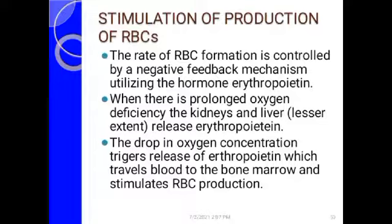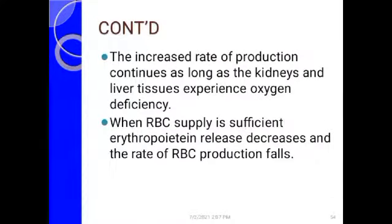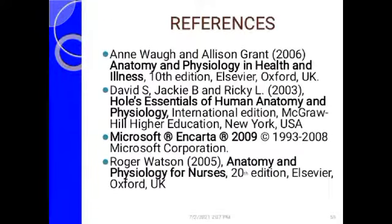Red blood cell production is regulated by a negative feedback mechanism. When the volume of red blood cells is low, the kidneys and liver produce the hormone erythropoietin, which stimulates the bones to produce more red blood cells. Once the deficit is compensated, erythropoietin production decreases and red blood cell production slows. This production continues as long as the kidneys and liver produce erythropoietin in response to oxygen deficiency from reduced red blood cells.